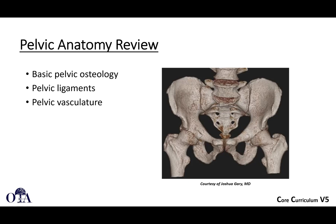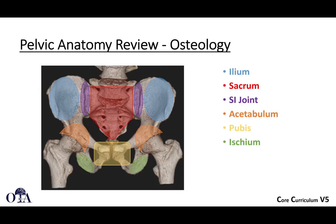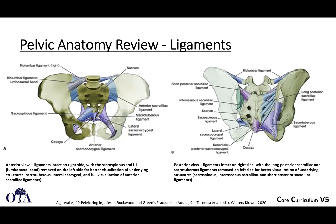Let's review some basic anatomy. The osteology is important to review. You have the ileum, and everything is symmetric in the pelvis. The sacrum is in the midline. The SI joints, the acetabulum, the pubis, and the ischium are shown here, with color to highlight each structure.